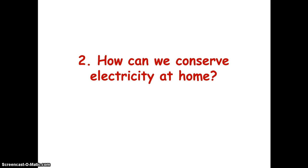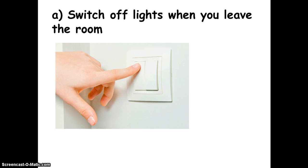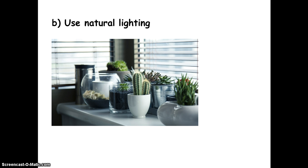How can we conserve electricity at home? One way is to switch off lights when you leave the room. You only turn them on when you are in the room and really need the lighting. There are many times when natural lighting can provide the light you need — you can simply open the curtains to enjoy natural lighting from outside, and you won't need to turn on the light bulbs.